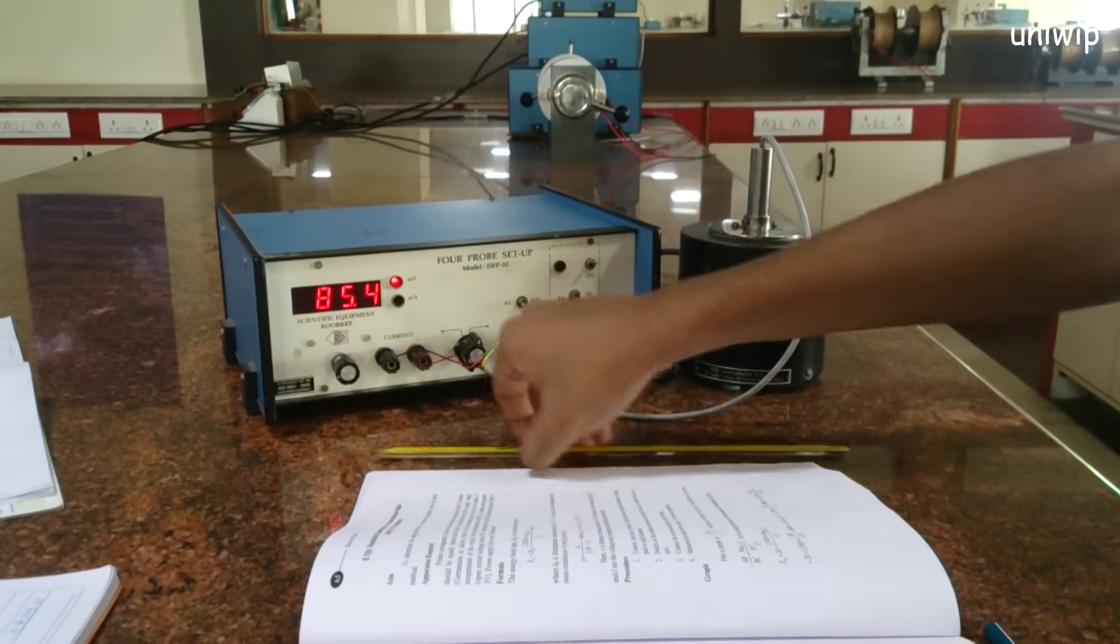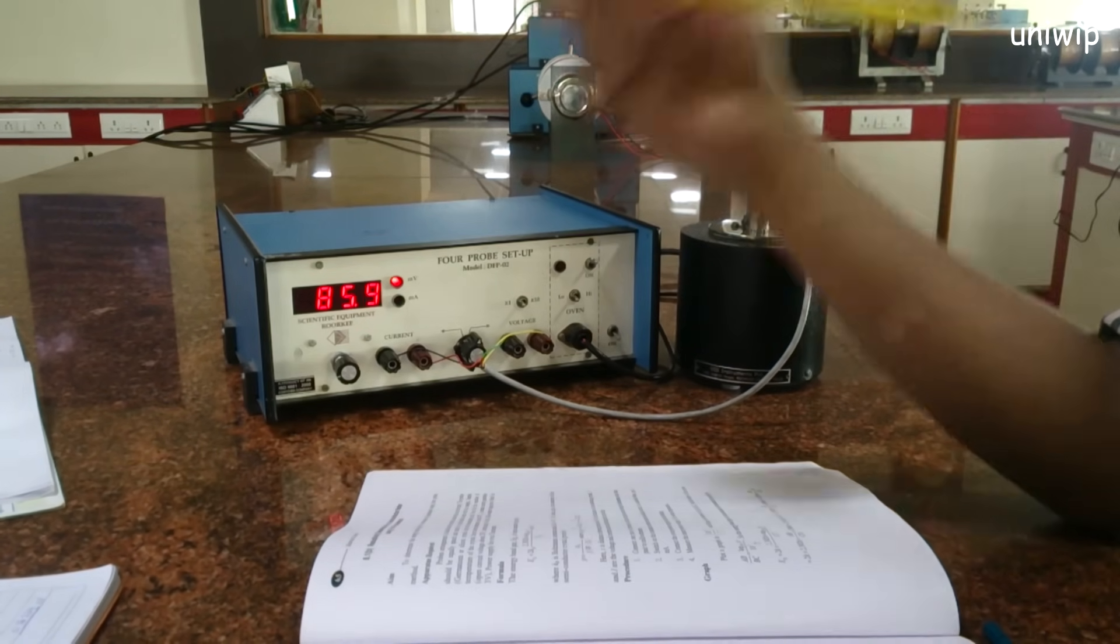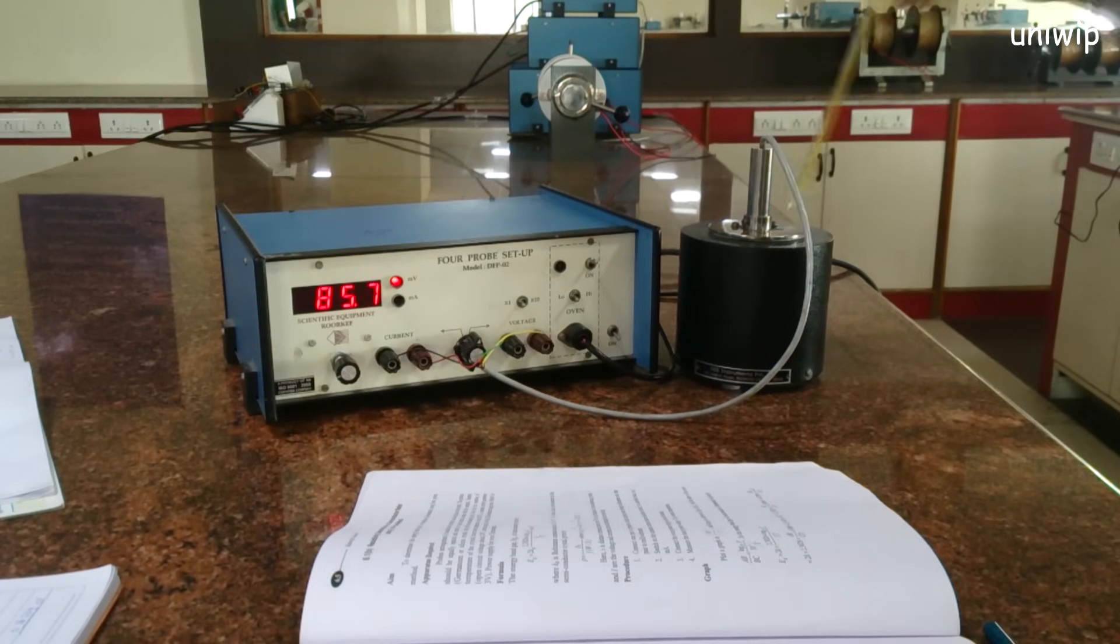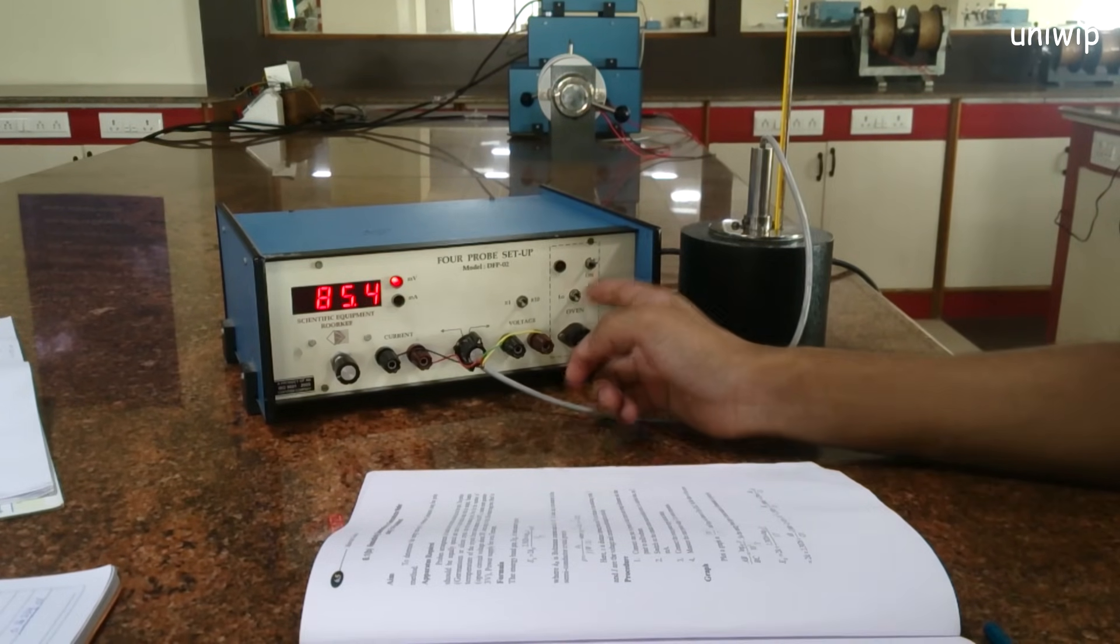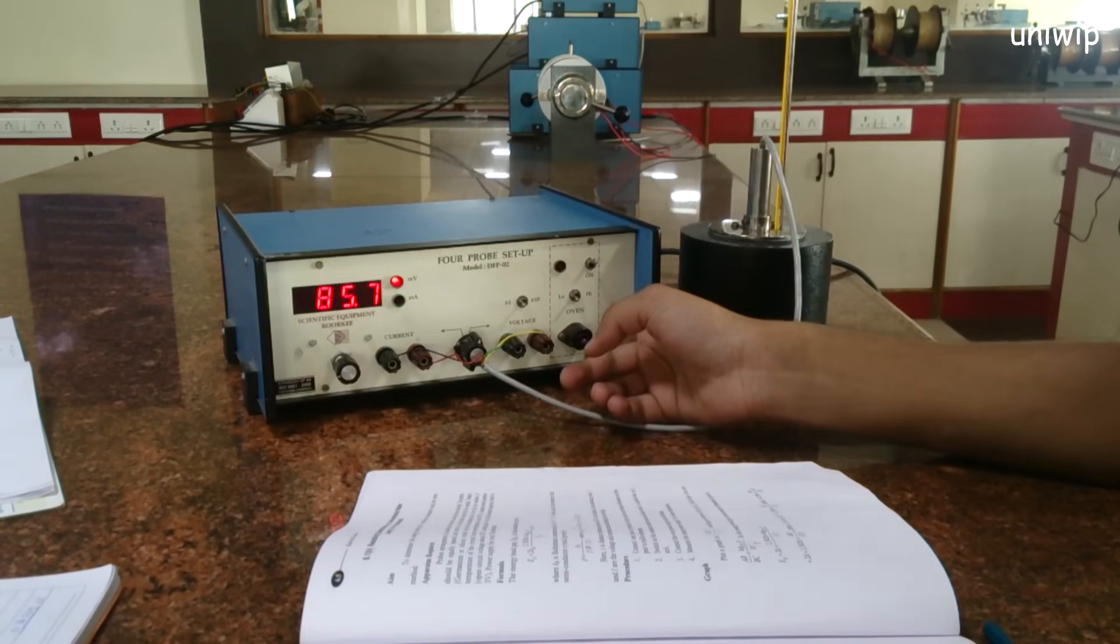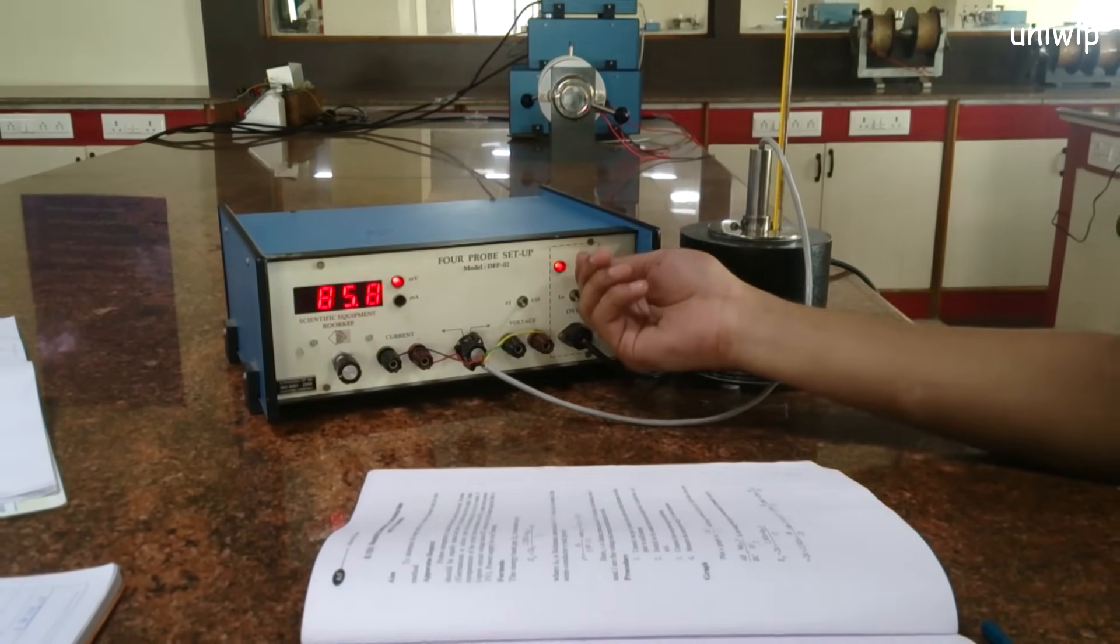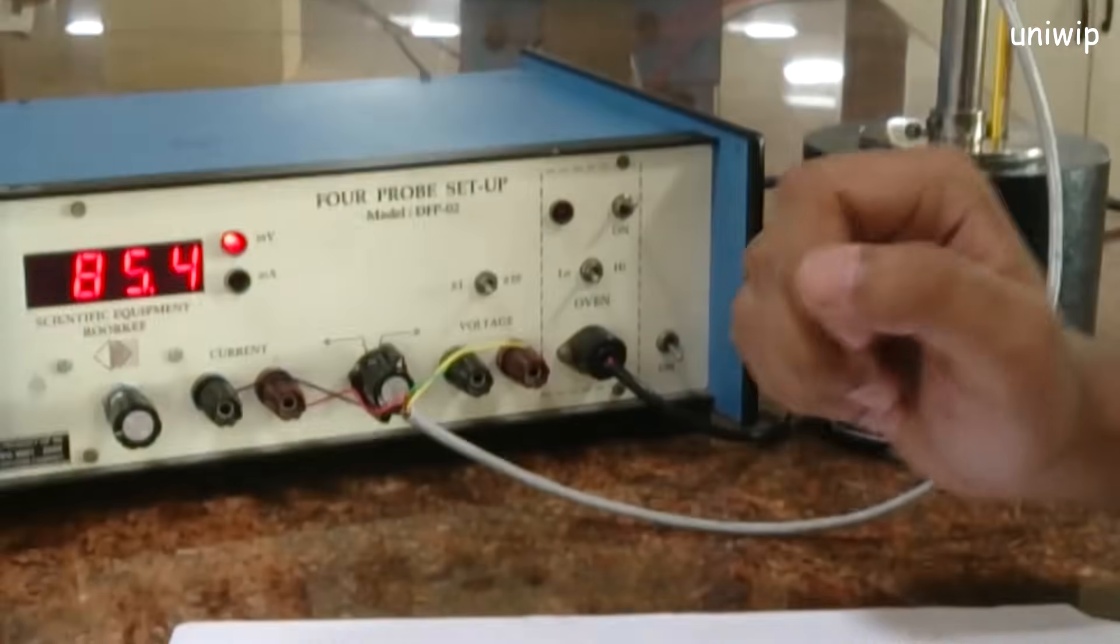For now, we're gonna increase the temperature from 35 degrees to 95 degrees and calculate the corresponding voltage. If you see this setup over here, it has an oven setup, low heating high heating, switch on the oven. If I switch this on, this will open the oven and the temperature will start heating. But for now, let's keep it closed.